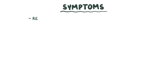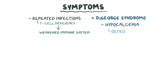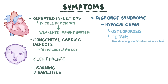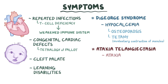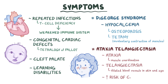Early symptoms of thymic hypoplasia are repeated infections due to a T cell deficiency, which results in a weakened immune system. In DeGeorge syndrome, there are also symptoms caused by hypocalcemia, which include osteoporosis and tetany, or involuntary contraction of the muscles. Other symptoms associated with this disorder are congenital cardiac defects like tetralogy of Fallot, cleft palate, and learning disabilities. In ataxia telangiectasia, there can also be symptoms like ataxia — a problem with muscle coordination — telangiectasia, which are dilated blood vessels in the skin and eye, and an increased risk of cancer.